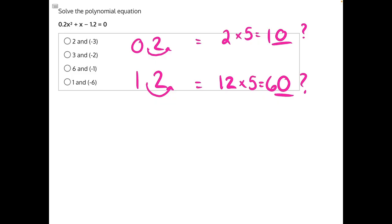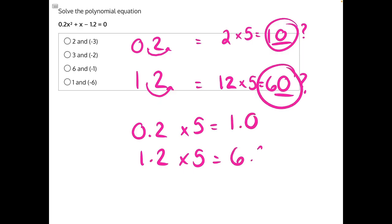So now if we go back to our original 0.2 and 1.2 and multiply them by 5, we would get instead of 10 it would be 1.0 and instead of 60 it would be 6.0.